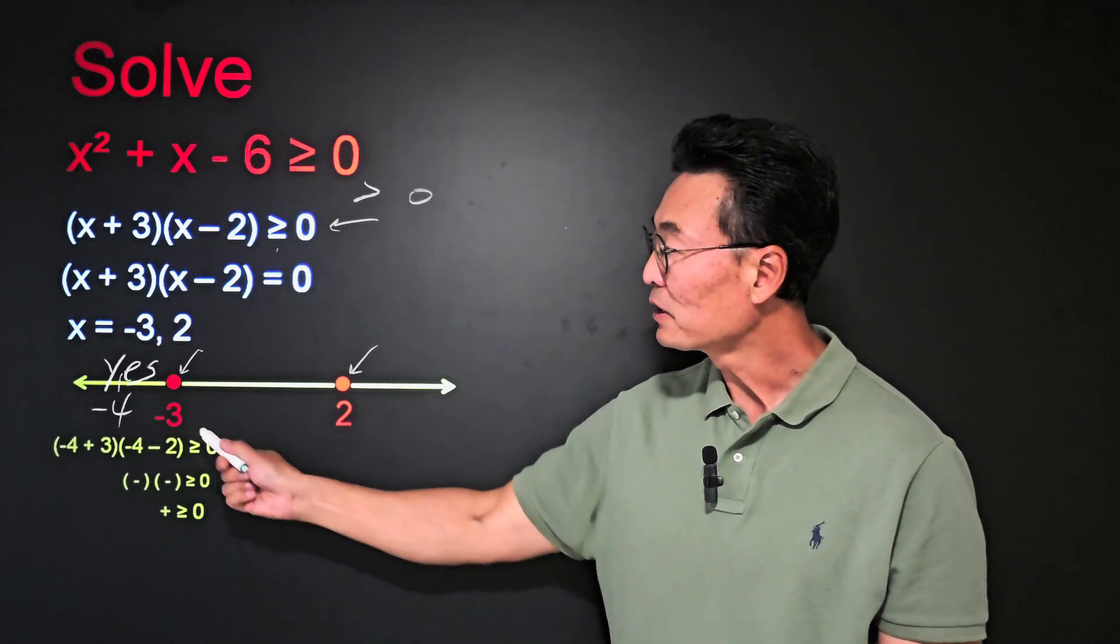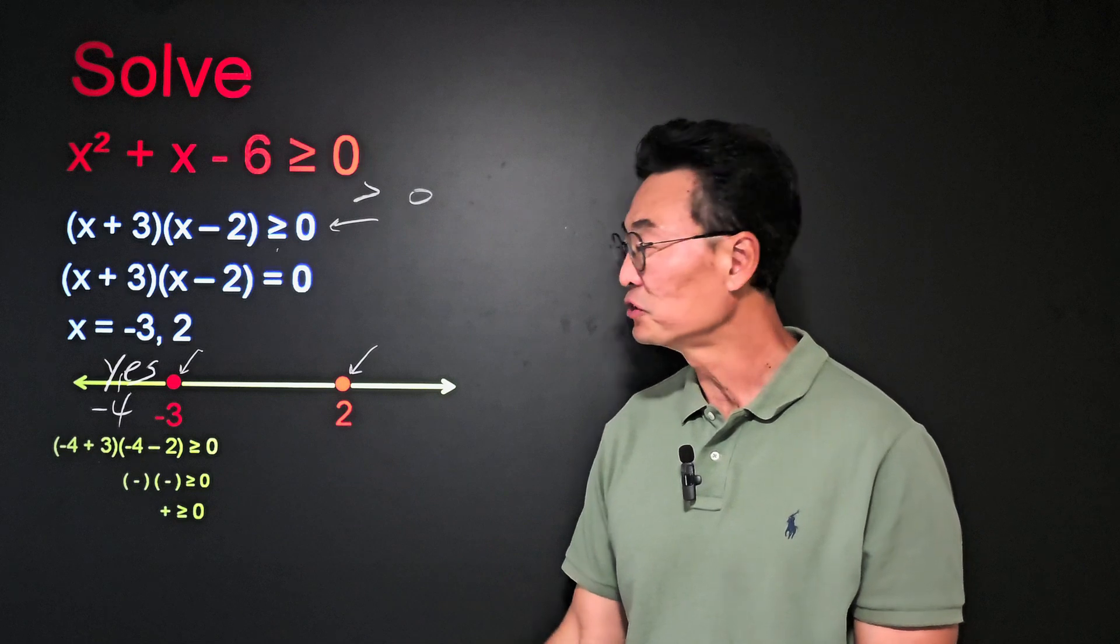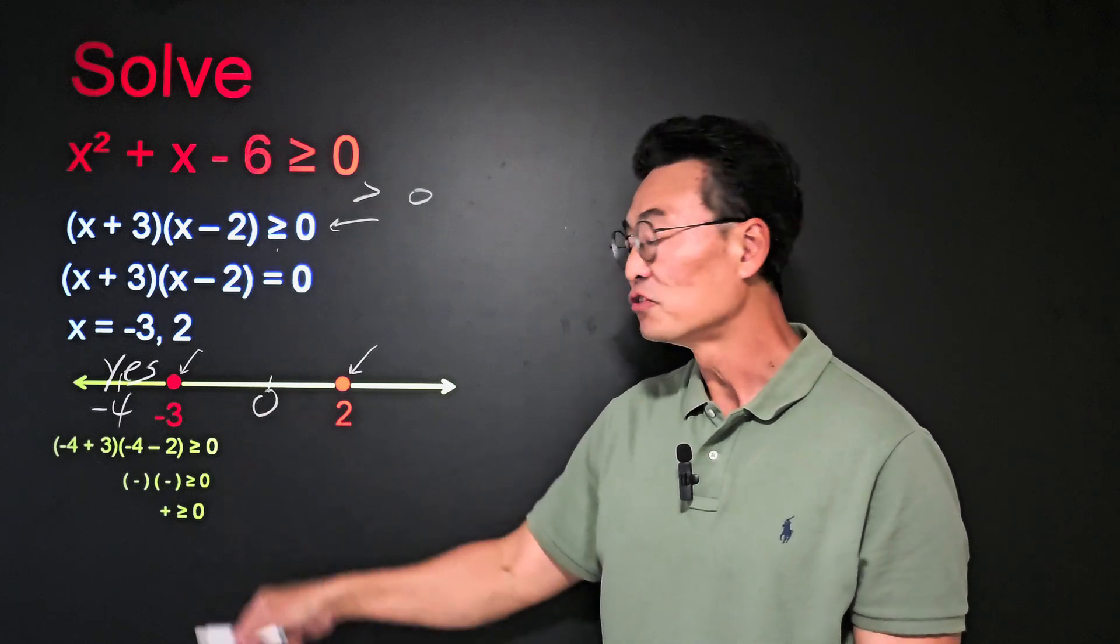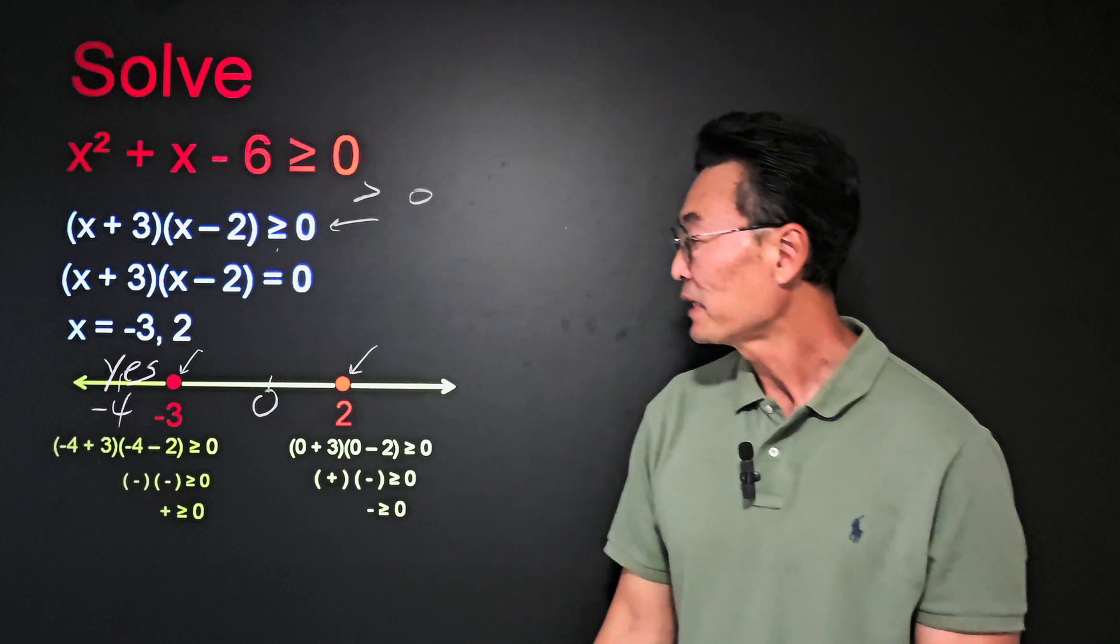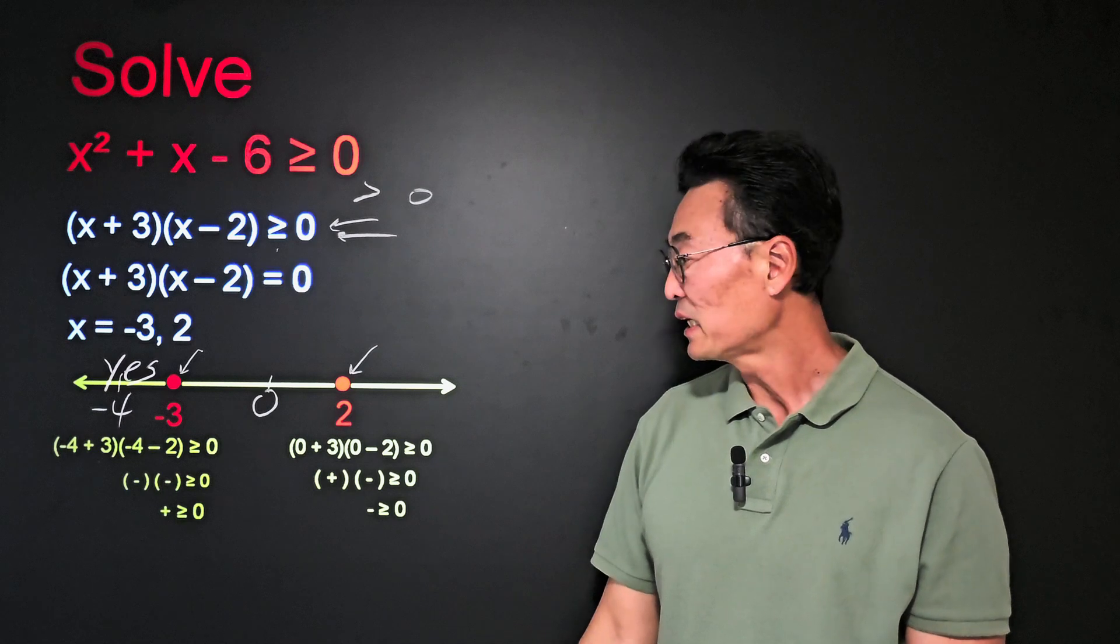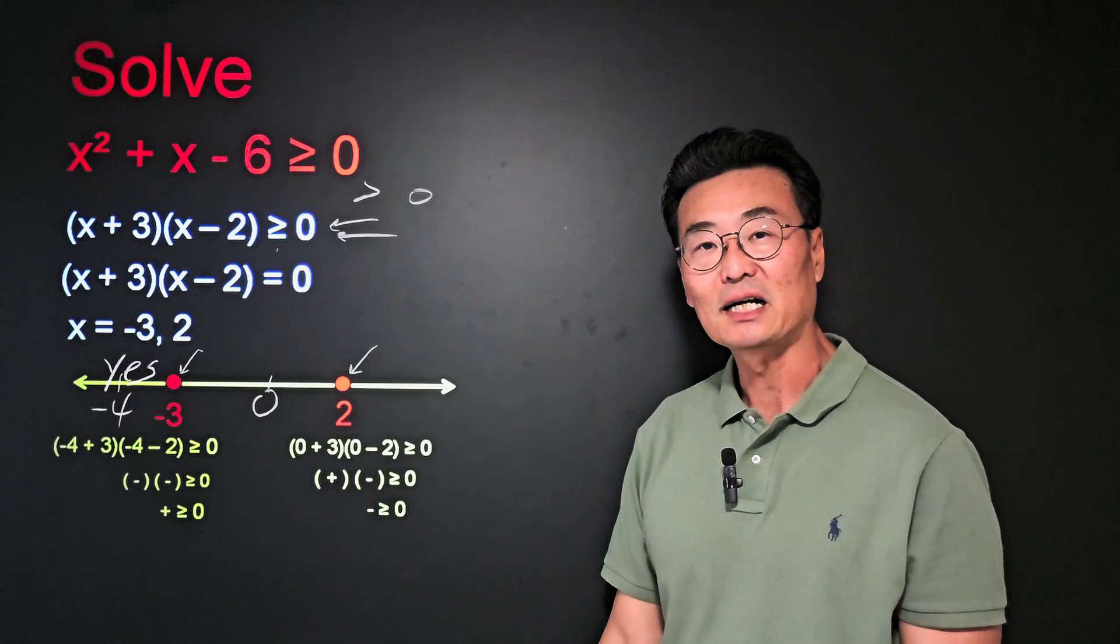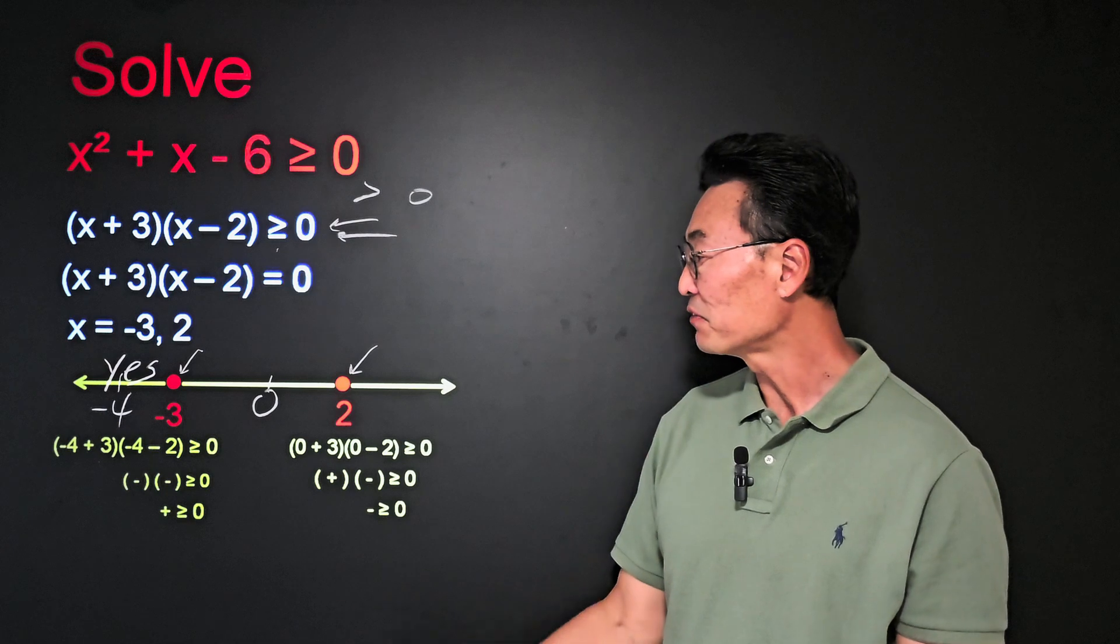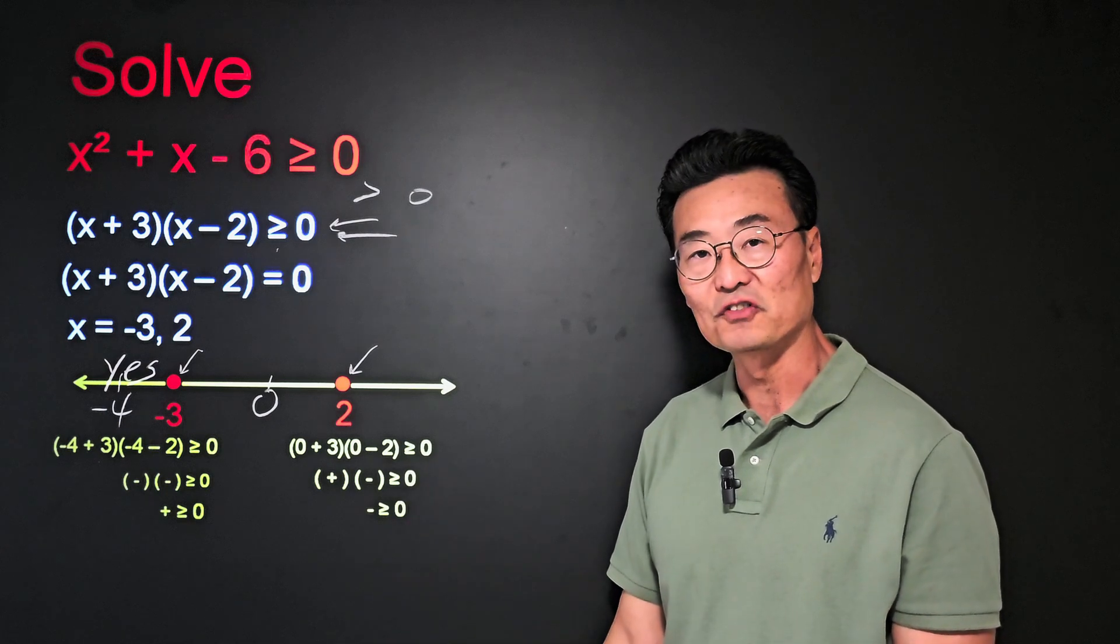Next, I like to pick a number between negative 3 and 2, and 0 is usually a good number. If I take 0, again, plug it into this factor form of the inequality, I get 0 plus 3 times 0 minus 2, and we want to find if that's greater than or equal 0.